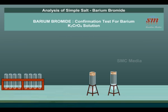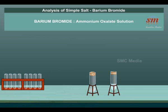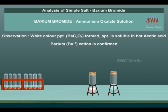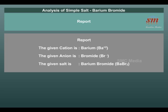Confirmation tests for Barium — Action of K₂CrO₄ solution: To the salt solution, potassium chromate solution (K₂CrO₄) is added. A yellow precipitate of BaCrO₄ is formed, which is soluble in dilute acetic acid and soluble in dilute HCl. Barium Ba²⁺ cation is confirmed.